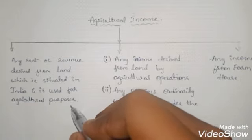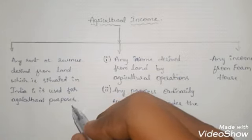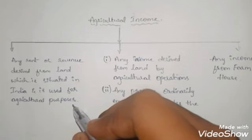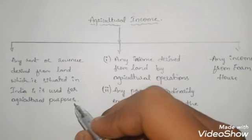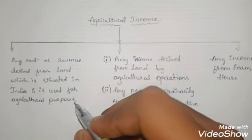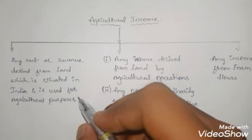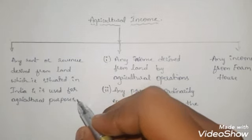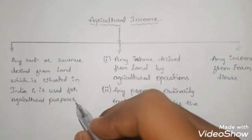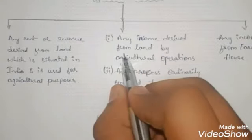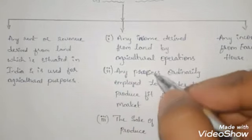The second condition is that the land must be situated within the boundaries of India. If the land given on rental or lease basis is situated in some other country, even though it is used for agricultural activities, the rent or revenue from that land cannot be treated as agricultural income.